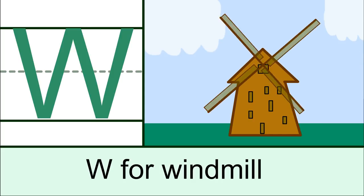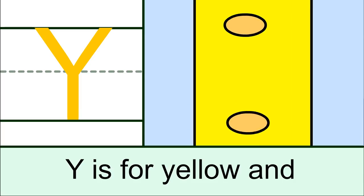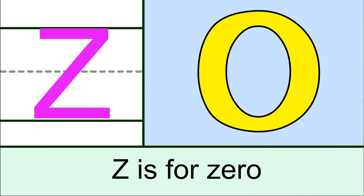W for wheel, X for xylophone, Y is for yellow and Z is for zero.